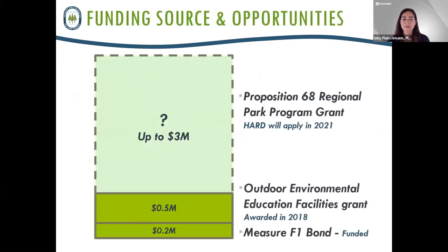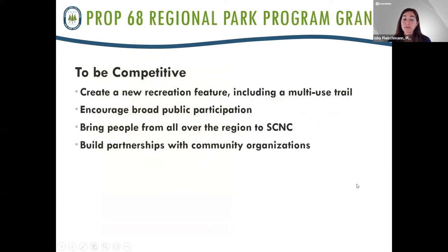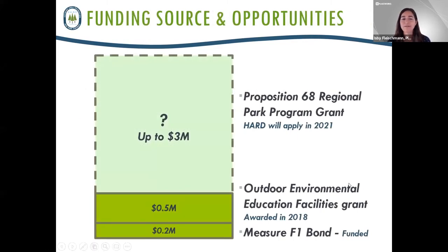There are a couple of key funding sources already identified. The planning process right now — the outreach, design, and grant writing — are funded by a Measure F-1 bond. Sulphur Creek Nature Center was also awarded a $0.5 million outdoor environmental education facilities grant in 2018 from California State Parks. The awarded funds haven't been used yet, but they need to be applied only towards improvements specified in the grant application, including an outdoor classroom, amphitheater renovation, improvements to the Creekside animal program area, and an entry kiosk and wayfinding signage.